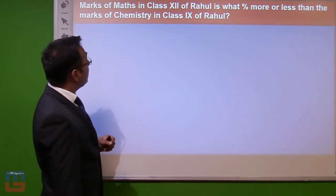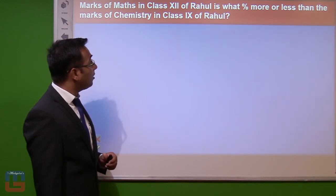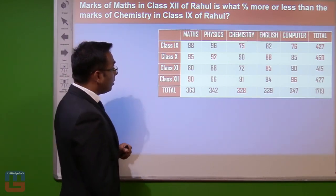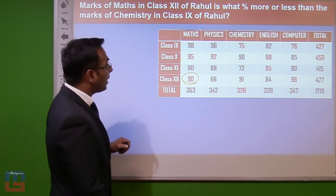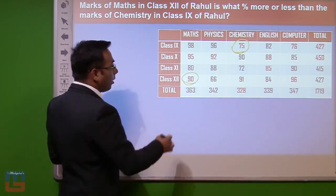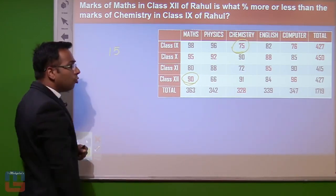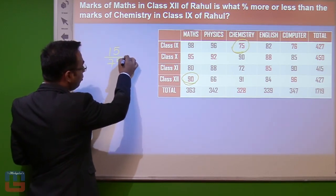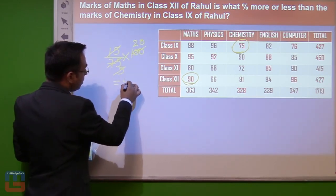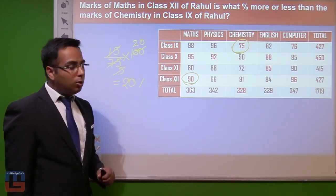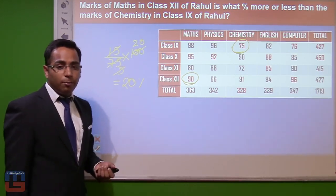Question 4: Maths marks in class 12 of Rahul are what percent more or less than chemistry marks in class 9? Maths class 12 = 90, chemistry class 9 = 75. The difference is 15. Percentage more = (15 ÷ 75) × 100 = 20%. So Rahul gets 20% more marks in maths class 12 than chemistry class 9.